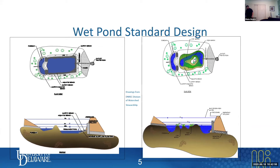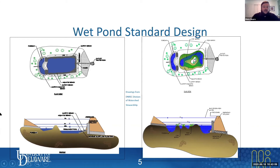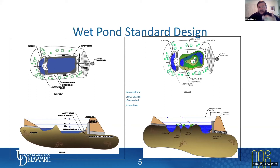Two questions from the audience: Does a wet pond have a liner? And does a wet pond need a fountain? Wet ponds can have a liner, but from my experience most of them do not. Using a liner is sometimes problematic, especially if you have a water table that shifts a lot. If you have a pond liner and the water table comes way up, it's going to push that liner up. So most of them are not lined, but there are a few.